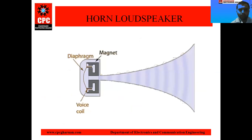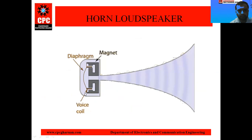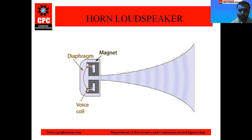Next is the horn loudspeaker. The horn loudspeaker is what we see on top of gurudwaras or mandirs. The function of a horn loudspeaker is to transfer the signal over a long distance. This is the diaphragm and this is the voice coil. The main operation of the loudspeaker is the same — the coil is present between the magnetic field. When current passes through the coil, it starts vibrating, and due to vibration, air pressure is generated. With the help of air pressure, the electrical signal is converted into a sound signal.